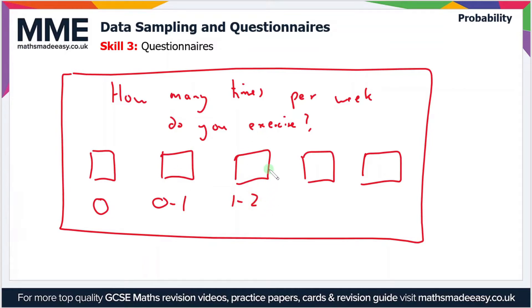The same if we had one to two - for instance, if someone did one hour of exercise, would they take this box or would they take this box? We don't know, so we can't have any kind of ambiguity in the response boxes. There can't be any overlap. The second box should be one to two times per week.